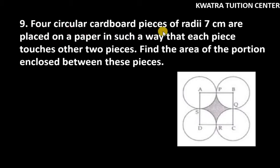It says 4 circular cardboard pieces of radii 7 cm are placed on a paper in such a way that each piece touches other 2 pieces. So you can see that we have 4 circular cardboard pieces and they are touching each other to form this shape. Find the area of the portion enclosed between these pieces. So you can see this shaded part in between circles.